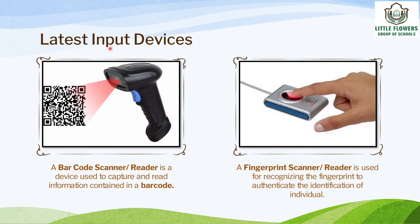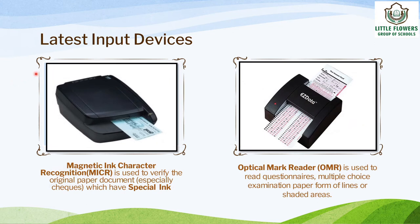A barcode reader or barcode scanner is a device used to capture and read information contained in a barcode. A fingerprint scanner is used to recognize or identify fingerprints and to authenticate the identification of an individual. Magnetic Ink Character Recognition, called MICR, is used to verify original paper documents, especially checks that have special ink. Optical Mark Reader, OMR, is used to read questionnaires and multiple-choice examination papers from marked or shaded areas.